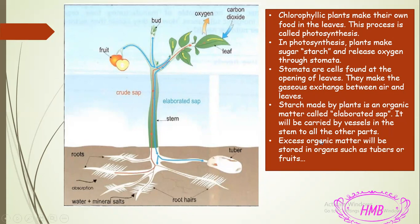The plant will use some of this organic matter to grow, to have energy, and to stay alive. The excess organic matter will be stored for further needs. It will be stored in organs such as tubers. The tuber stores excess organic matter below the soil, while excess sugar can be stored above the soil, such as in fruits. So tubers and fruits are the storage parts in the plant.